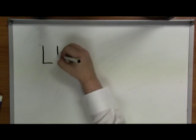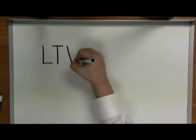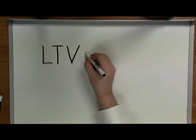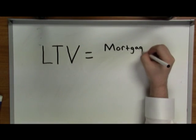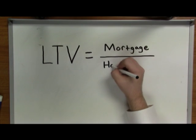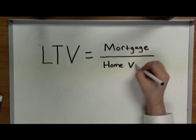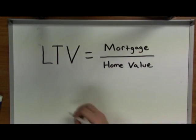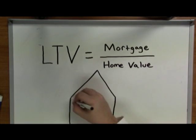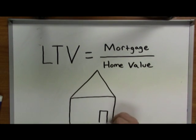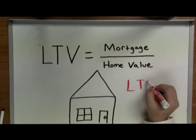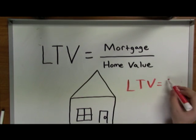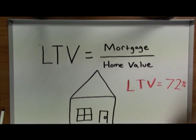Loan to Value Ratio, or LTV, is simply your mortgage divided by the value of your home. It is calculated by dividing your mortgage balance — either your existing balance or future mortgage — by the value or purchase price of your home, and is expressed as a percentage. Essentially, LTV is the percentage of your home that is owned by the lender.